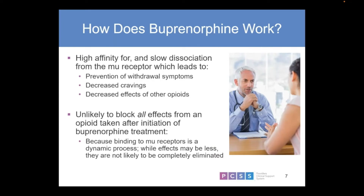Buprenorphine works because of its high affinity and slow dissociation, preventing withdrawal symptoms and reducing cravings. Just as when we get thirsty we think about water more frequently, a person whose brain has adapted to need opioids will crave them more the longer they go without. Buprenorphine cuts that off — it results in them feeling as if they had that drink of water, with no ongoing thought of it. They can have a memory of having used, but that's very different from a craving.